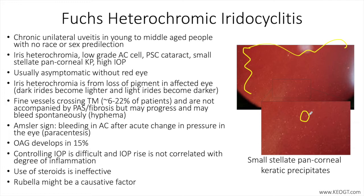Complicating presentation for care is the fact that the disease process is often asymptomatic and without red eye. Gonioscopy often reveals fine vessels crossing the trabecular meshwork in about 6–22% of patients, and these are not accompanied by peripheral anterior synechiae or fibrosis, but may progress and may bleed spontaneously, causing a hyphema.